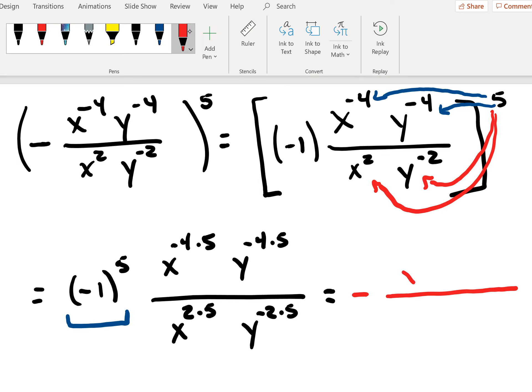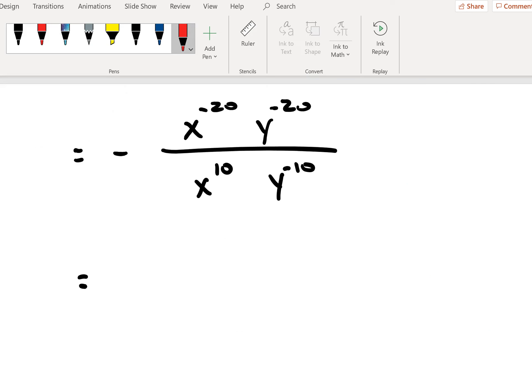Up top, you're left with negative four times five is negative twenty. And then y to the minus four times five is negative twenty. x to the two times five is x to the tenth. And y to the two times five is y to the negative ten.